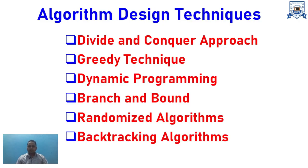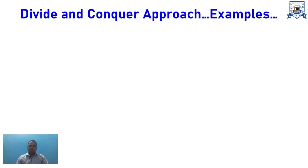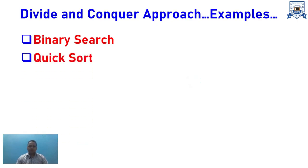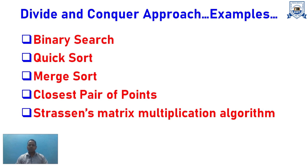In the Divide and Conquer approach, a problem is divided into sub-problems. An algorithm is then applied recursively to each sub-problem — this is the conquer phase. Once all sub-problems are solved, the results are combined to obtain the solution to the original problem. Examples include Binary Search, Quick Sort, Merge Sort, Closest Pair of Points, and Strassen's Matrix Multiplication.